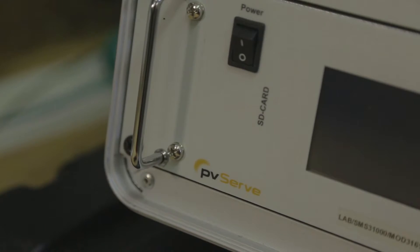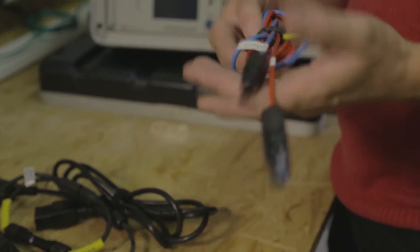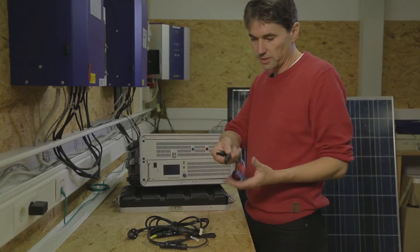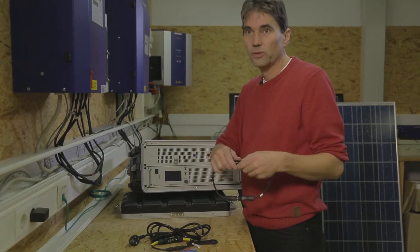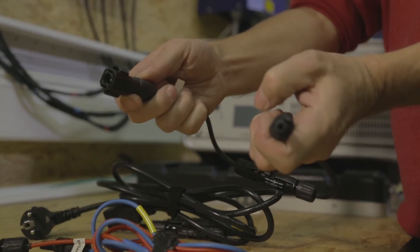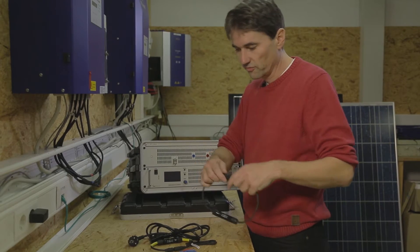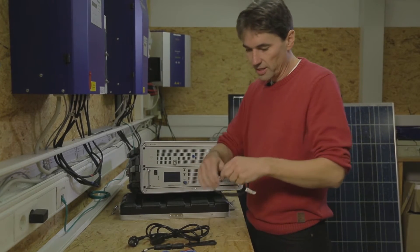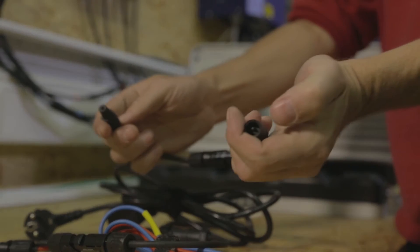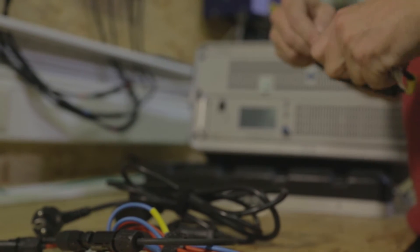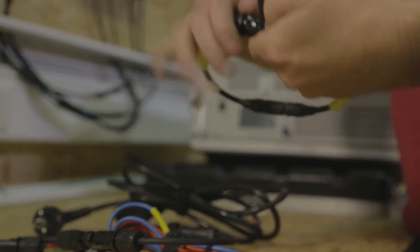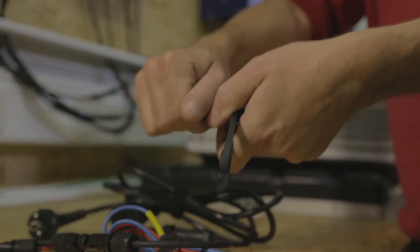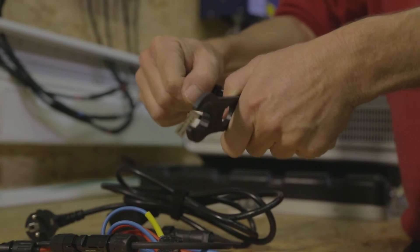A lot of accessories are available for PVServe. There's a laboratory plug with multi-contact MC4 contacts, an adapter to connect multi-contact MC4 to SunnyClicks, which is used with SMA inverters, and an adapter to connect MC4 to MC3, which is still commonly found in older solar arrays. There's even a special tool you can use to unplug multi-contact MC4 connectors.